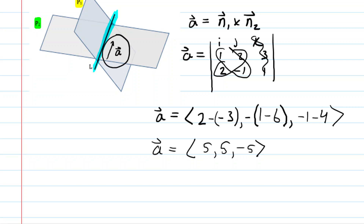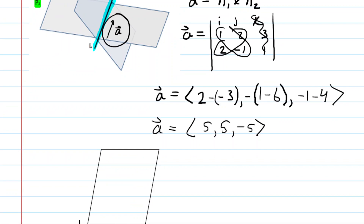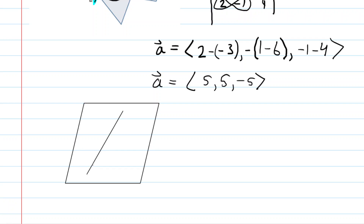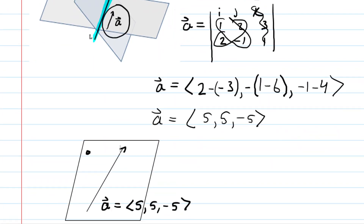That line of intersection also lies on the plane whose equation we're trying to determine. Here is that plane, and here is the line of intersection of the other two planes. We just figured out a vector running parallel to that line, so this vector lies on our plane. We can also put an arrowhead on it to show that it is a vector. We also know a point on this plane — the question gave us the coordinates: (3, 1, 4).